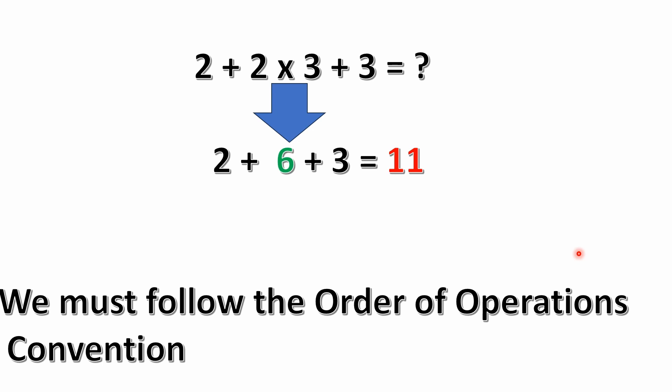Multiplication has precedence over addition. First of all, we solve the multiplication, the 2 times 3. You can see here where I have the arrow. It's 2 plus 6 plus 3 equals 11.